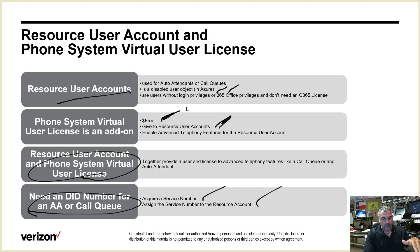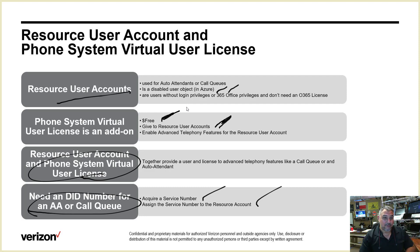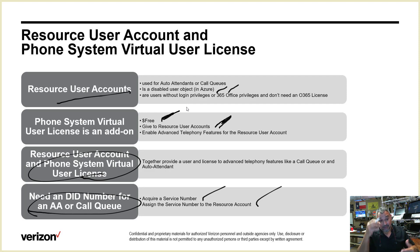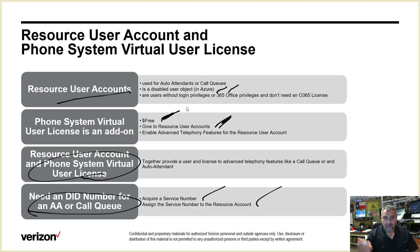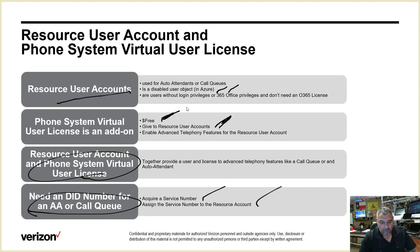Interestingly, I assigned service numbers without having to buy a Calling Plan — I couldn't quite figure that one out. If you figure it out, put it in the description below. Now let's change gears to the Calling Plan license. Both Calling Plan and Direct Routing have to do with DID numbers — direct inward dial numbers — and the ability to dial the PSTN.